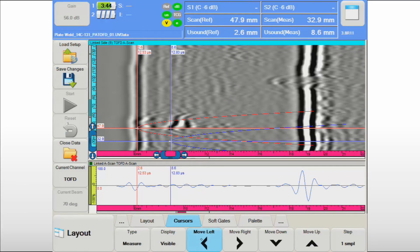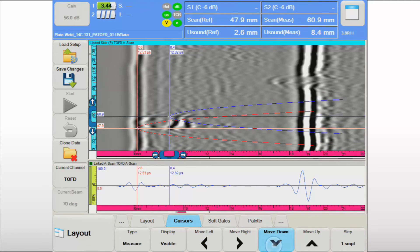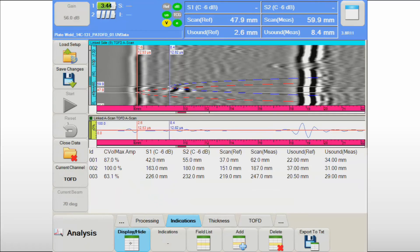The UT operator can accurately position the two cursors along the scan and ultrasound axes using the new cursor button menu below the data screen. The length of the flaw is confirmed at 12 mm by the TOFD technique, and the height is measured at 5.8 mm. Similar to the pulse echo results, the information is saved in the indication table.